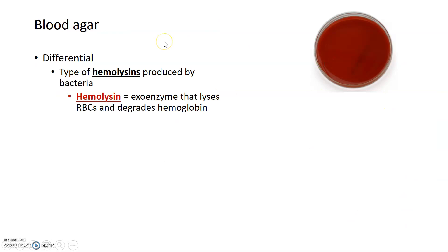Other types of media, such as blood agar, are not selective but are differential. Blood agar is what's considered an enriched media — it's very favorable for growth of many different microorganisms and doesn't have any selective agents in it. But blood agar is good for differentiating between different types of bacteria, specifically the types of hemolysins that are produced by bacteria.